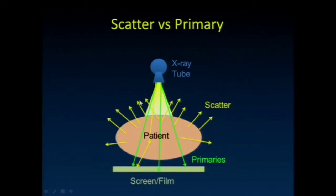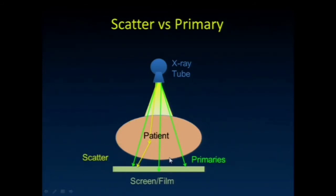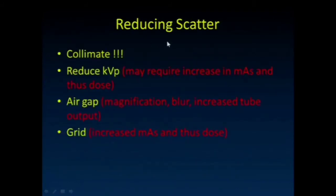Here's the patient—all those scattered x-rays coming out. I emphasize again that many fewer make it through the patient. Here I've shown a scatter-to-primary ratio hitting the screen closer to one-to-three, but the true number is actually closer to three-to-one—more scatters than primaries. We're ignoring everything that was absorbed completely or back-scattered and didn't hit the detector.